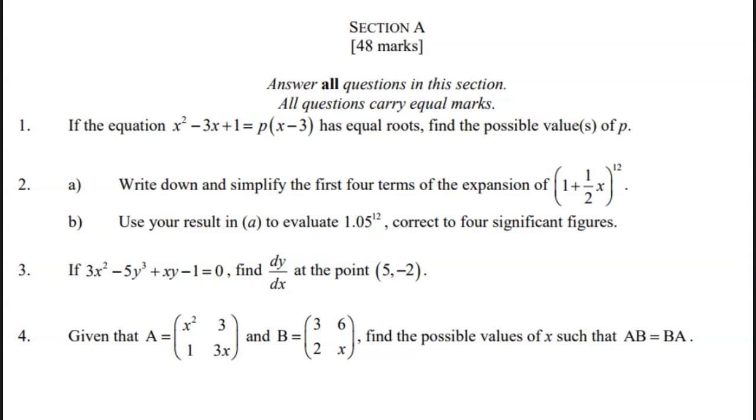Question 1: If the equation x squared minus 3x plus 1 equals P times open bracket x minus 3 close bracket has equal roots, find the possible values of P.